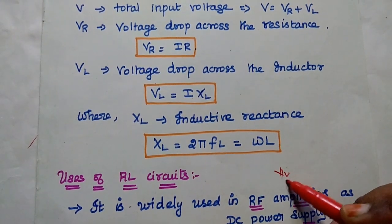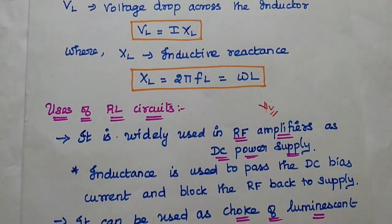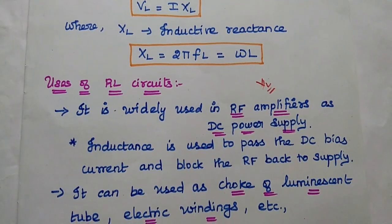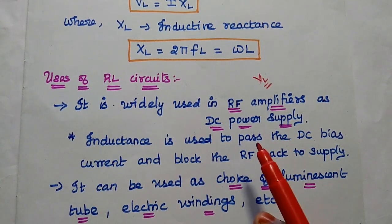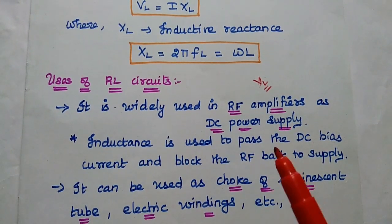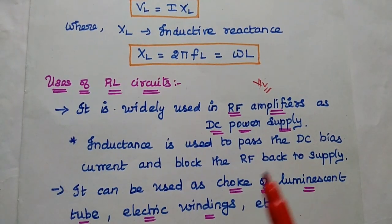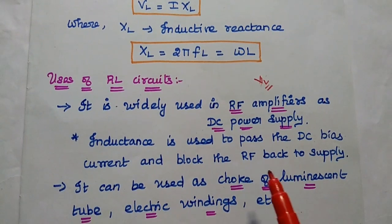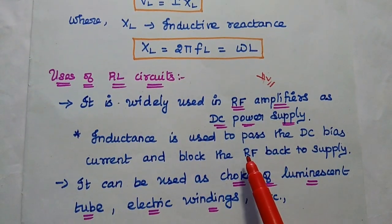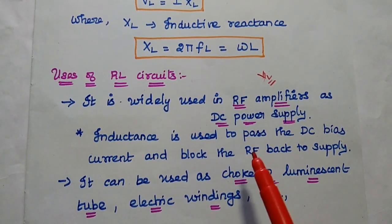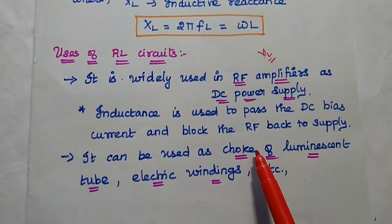This inductive reactance is an imaginary value. Next, we are going to discuss the uses of this RL series circuit. This RL series circuit is widely used in RF amplifiers as a DC power supply, because the inductor allows only DC current and blocks RF signals back to the supply. It can be used as a DC power supply in RF amplifiers.